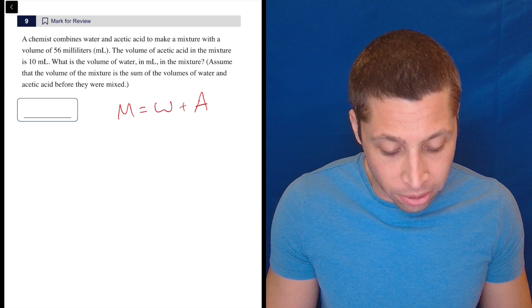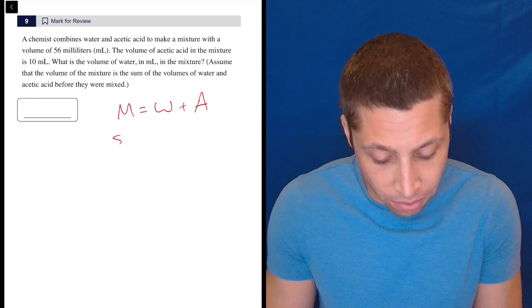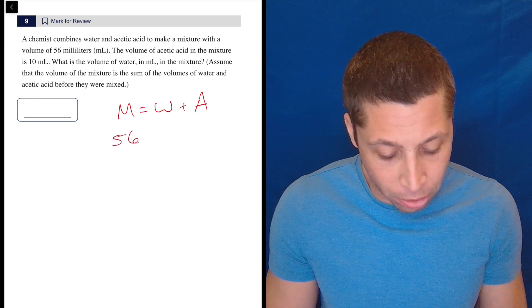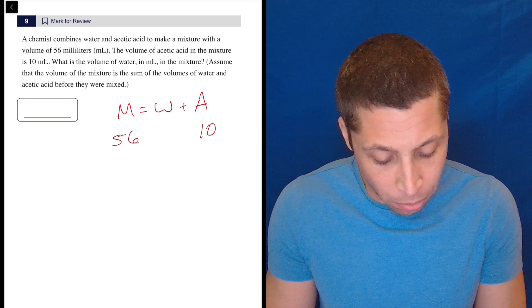Okay, well, chemist combines water and acetic acid to make a mixture with a volume of 56 milliliters. The volume of acetic acid in the mixture is 10. What is the volume of the water?